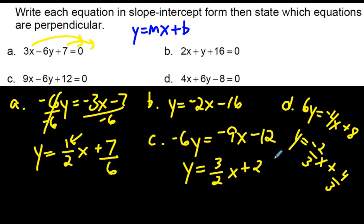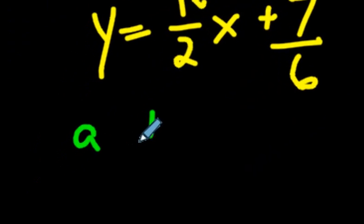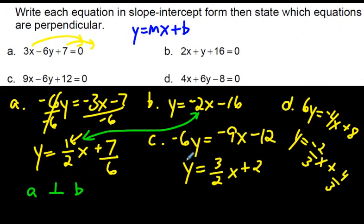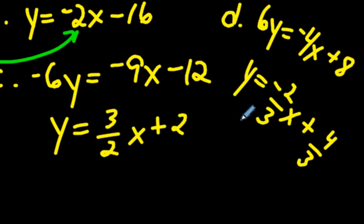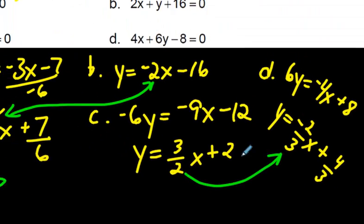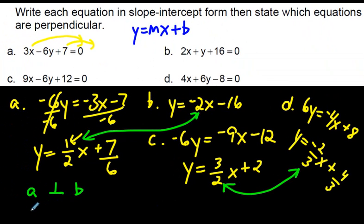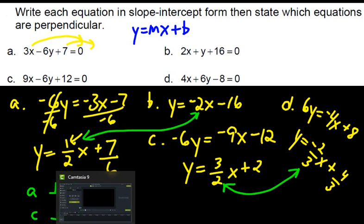So which one of these are perpendicular? The trick is, look for two equations here that are negative reciprocals of each other. Well, I see that 1 half and negative 2 are negative reciprocals of each other. So A and B, A is perpendicular to B. What about C and D? 3 over 2 and negative 2 over 3. Sure enough, these two are perpendicular. They are negative reciprocals of each other. So C is also perpendicular to D. And that would be our answer for these guys.